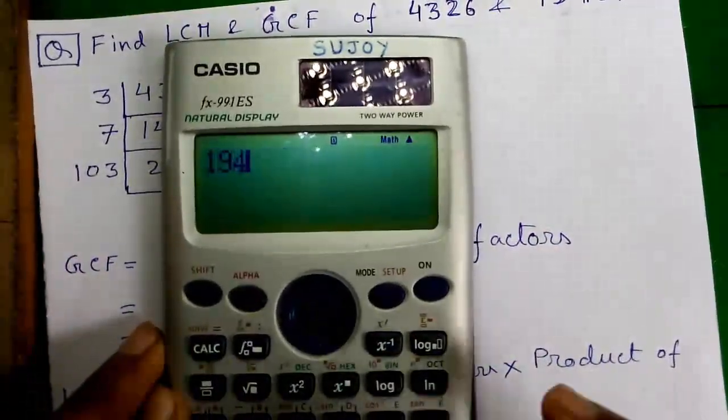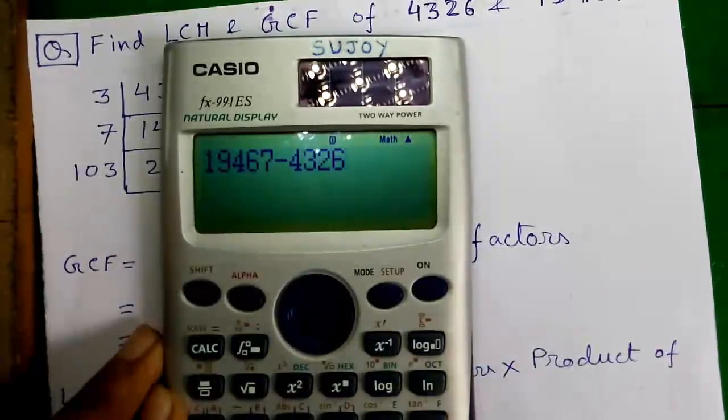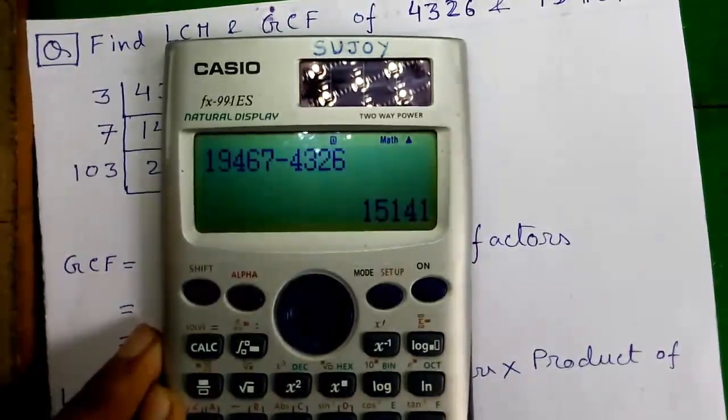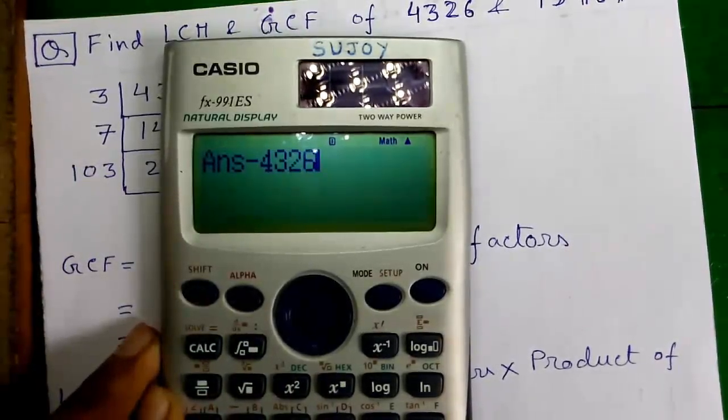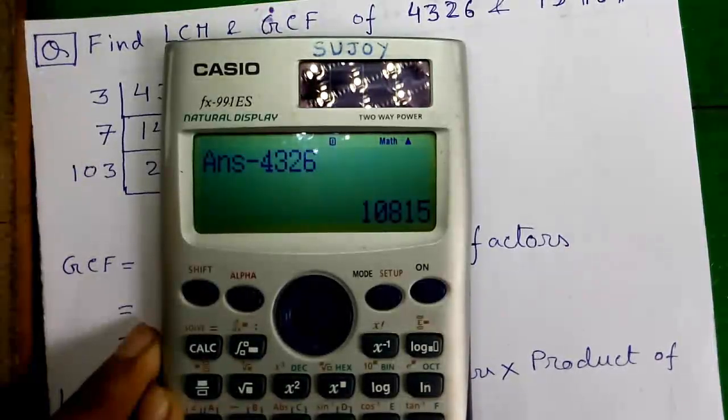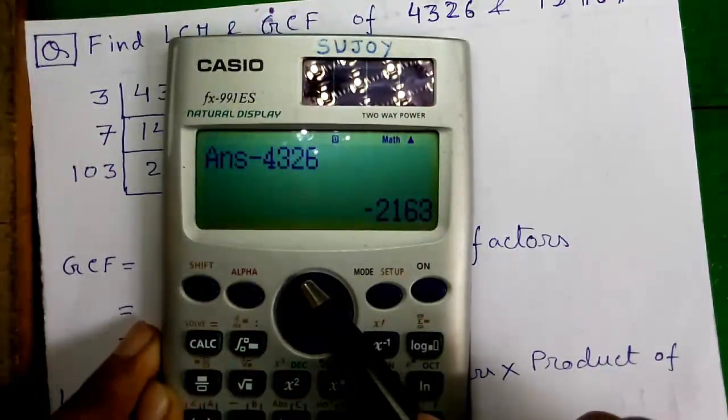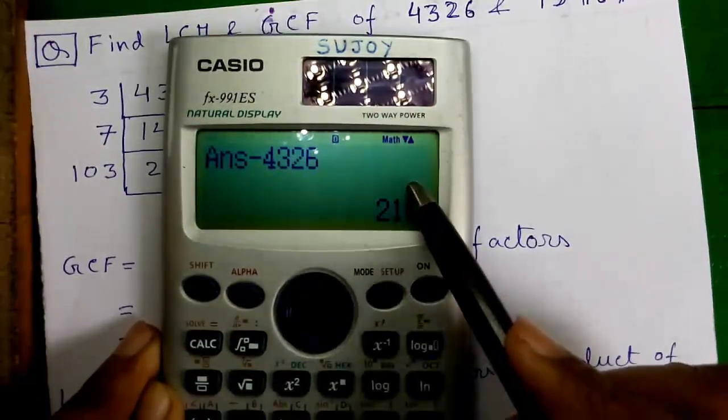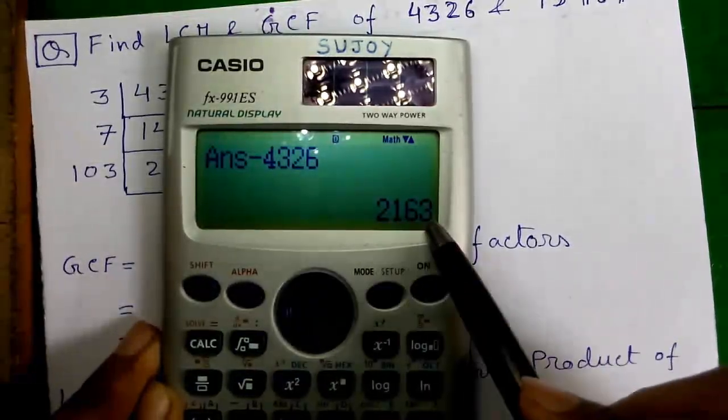So 19467 minus 4326 and press the equals button. Now press the answer button minus 4326 that is B value, and press equals button and continue pressing the equals button until you get a minus sign or a zero. So if you get a minus sign, press the joystick up and notice the value.